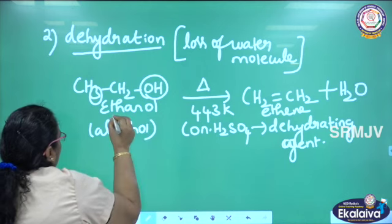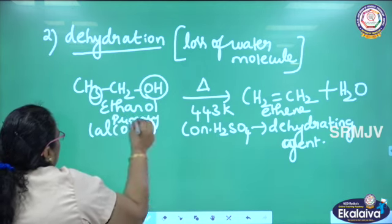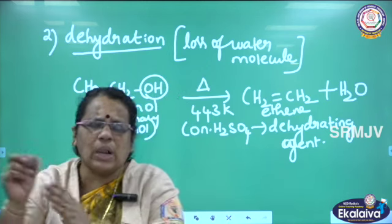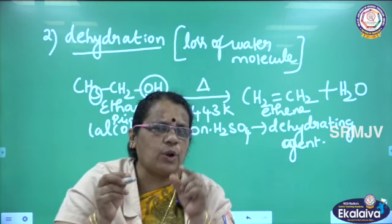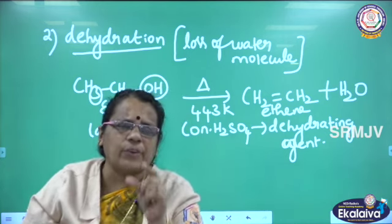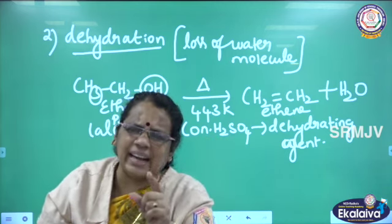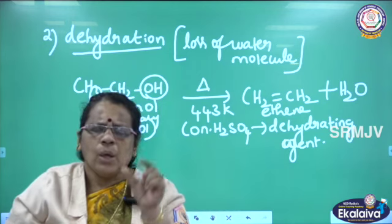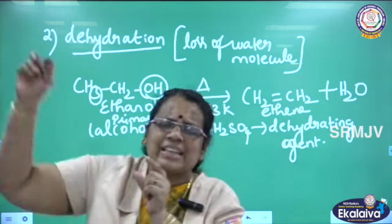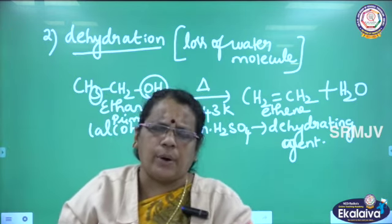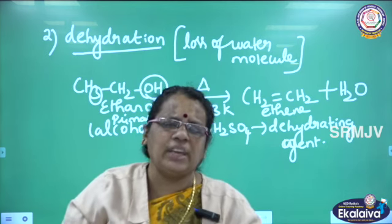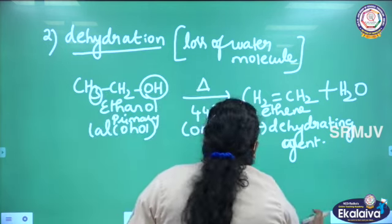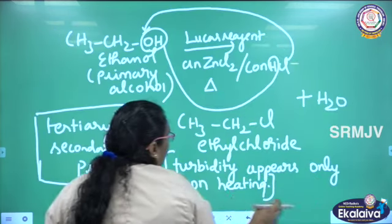Ethanol is converted into ethene. Ethanol is a primary alcohol. So ethanol is converted into ethene. How do we call this reaction? Dehydration — removal of water molecule. By adding concentrated sulfuric acid, which acts as a dehydrating agent, the water molecule is removed from ethanol, and we get an unsaturated hydrocarbon with a double bond. Ethene. Saturated alcohol is converted into unsaturated alkene. This is dehydration.